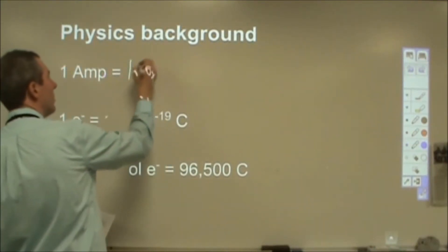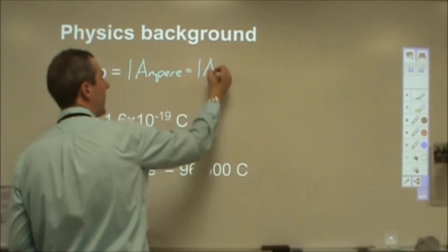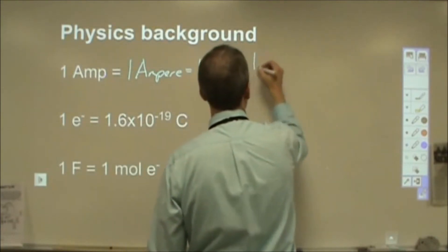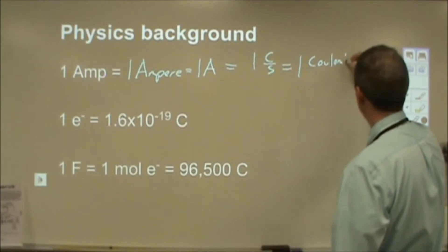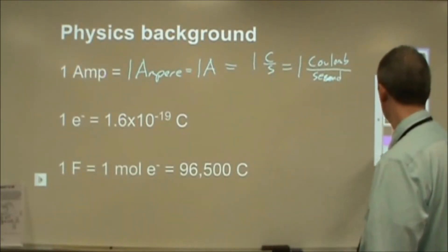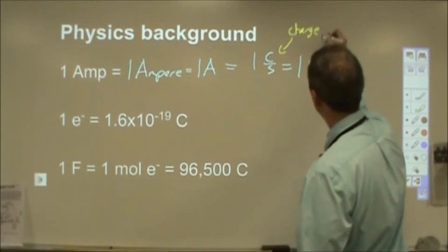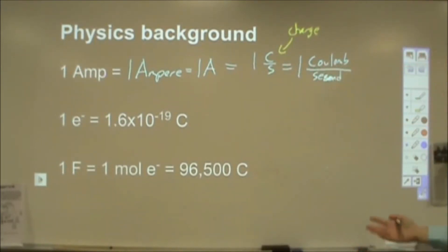So first of all, an amp, also called an ampere, also just A for amp, is equivalent to units of a coulomb per second. So a coulomb is a unit of charge and seconds obviously a unit of time. So charge per unit time will give you your amperage or your current.